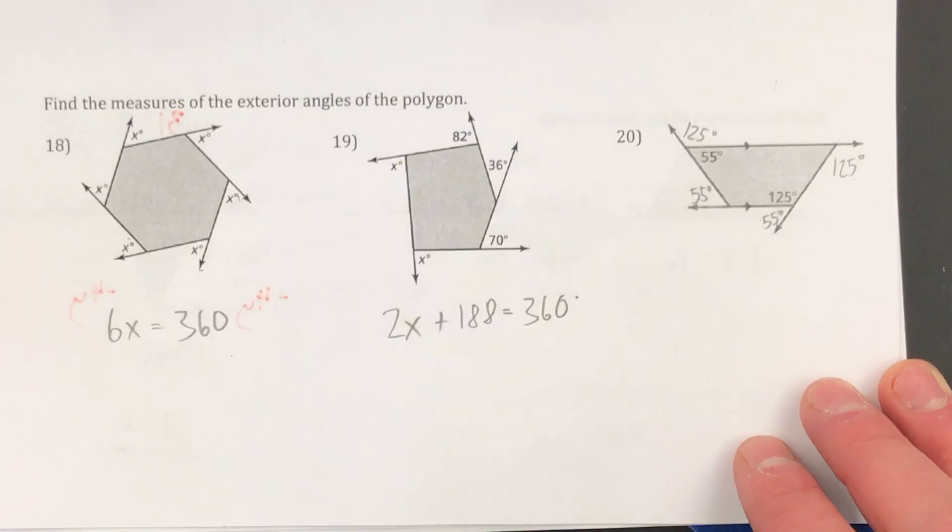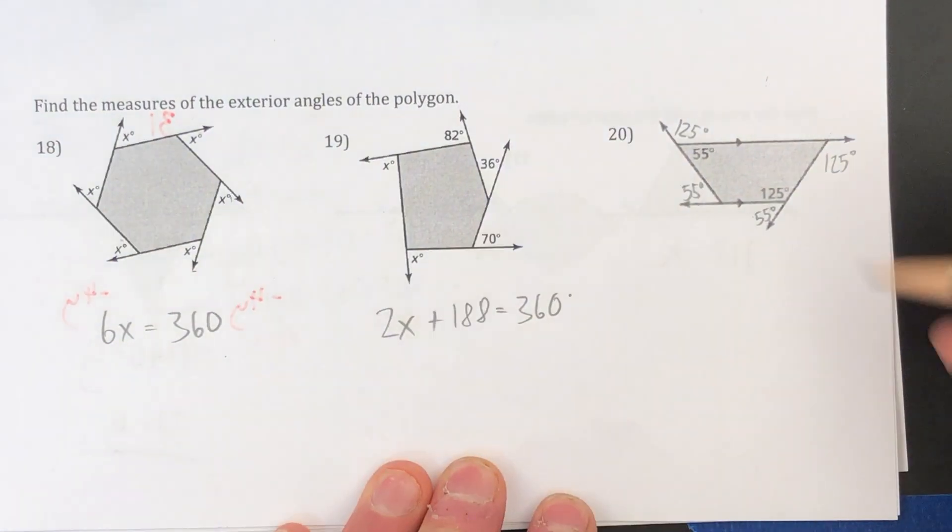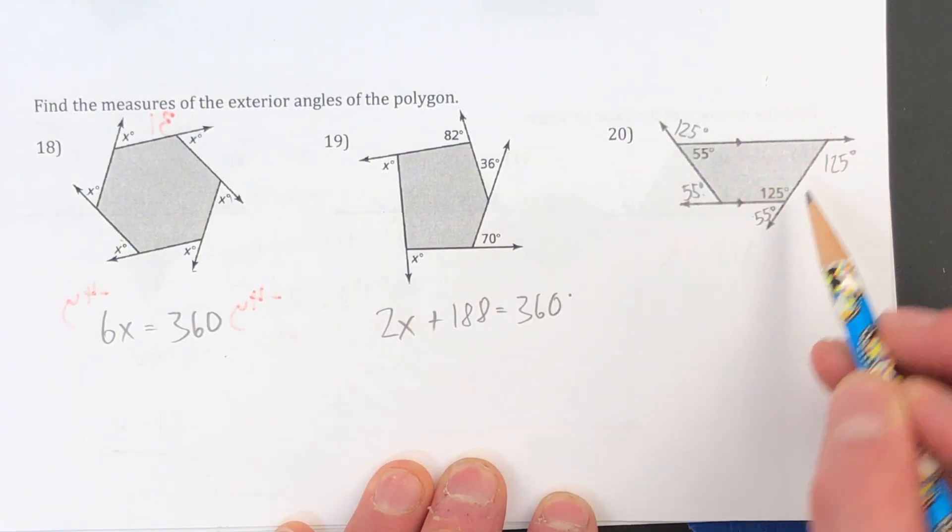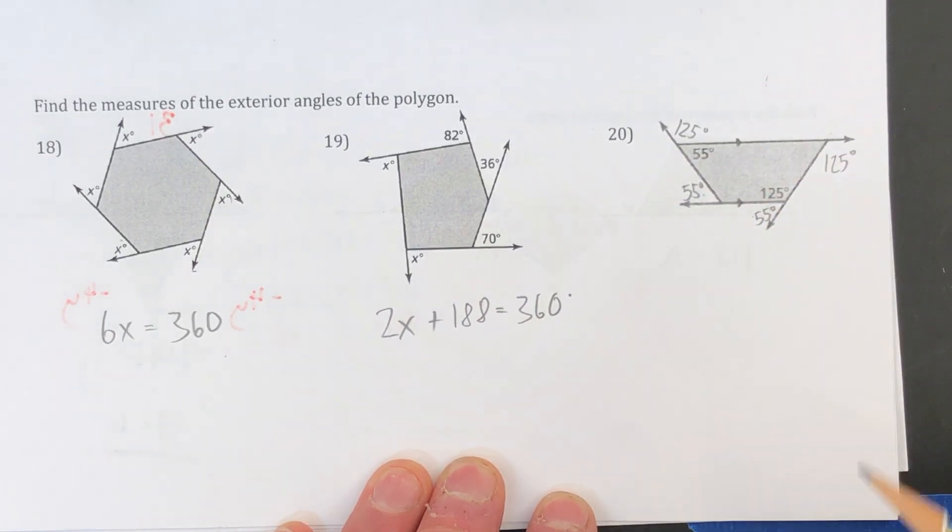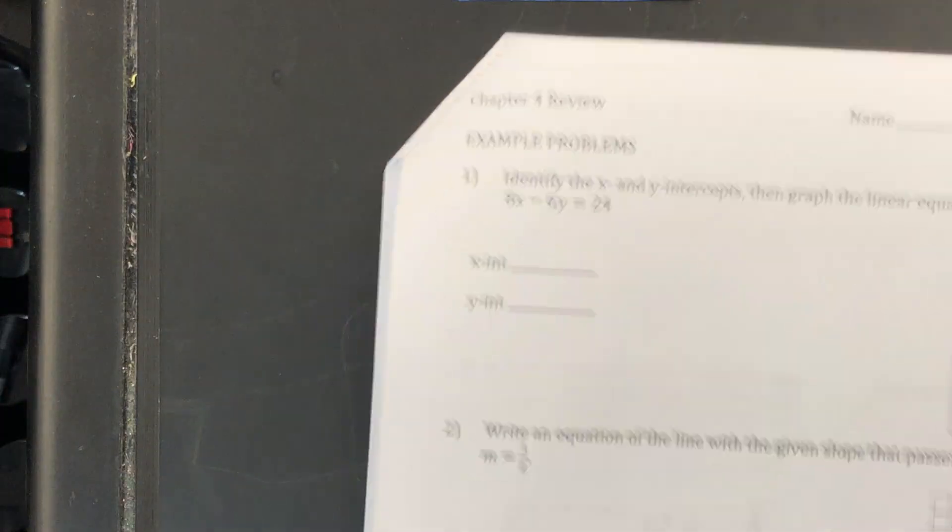Number 20 is kind of a funny one. So I'll just let you take a peek here. But I'm finding these angle measures based on the fact that these are parallel lines and these sides are both transversals. So I can use adjacent supplementary to figure out these angle measures. Okay, moving on to chapter four here.